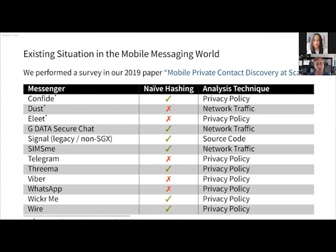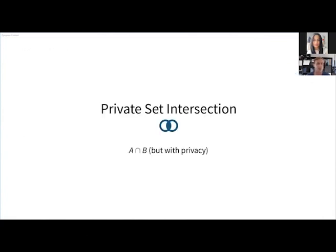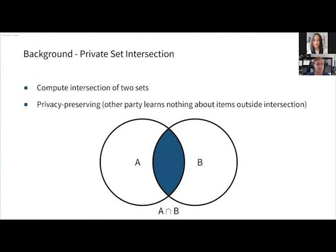So what techniques can we actually use to improve this situation? That's where we go into the area of private set intersection. Private set intersection is, as the name tells you, an intersection of two sets of items where you want to compute the items in the intersection in a privacy-preserving way. Specifically, this means the other party learns nothing about items outside of the intersection.